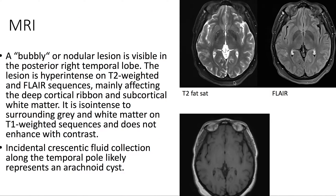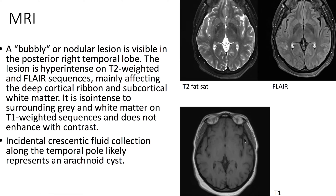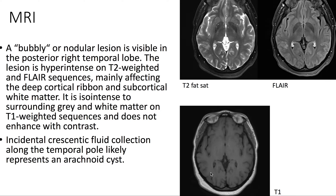On MRI, we see a bubbly or nodular lesion in the posterior right temporal lobe. The lesion is hyperintense on T2-weighted and FLAIR sequences. On T1-weighted imaging, the lesion appears isointense.